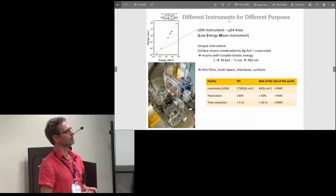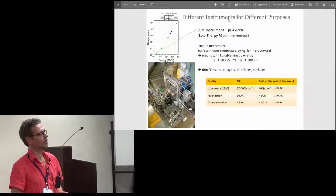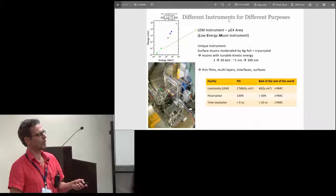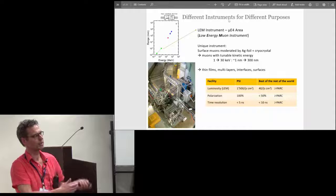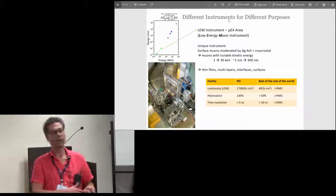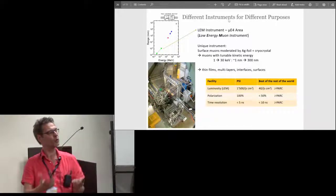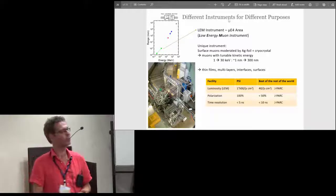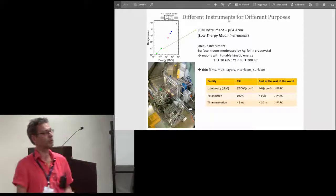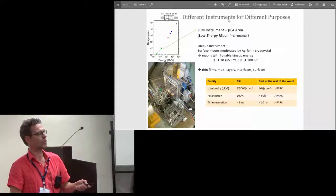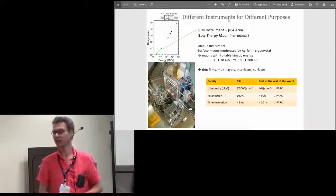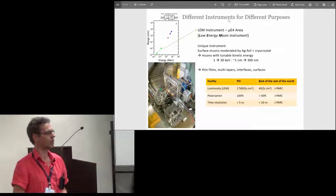I mentioned already the low energy muon instrument where we have about 1500 muons per second per square centimeter. There's a project at JPARC where they don't use this simple moderation technique. They use the first form muonium in vacuum and then they do a two-step laser ionization, but it's very complicated. They have difficulties with the laser power, so at the moment they have much lower beam intensity. Therefore they don't have yet a user facility open.